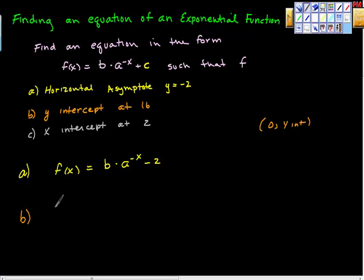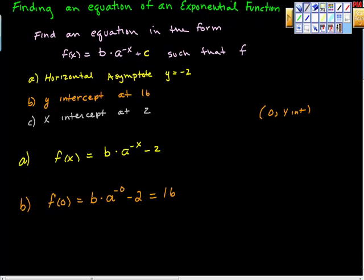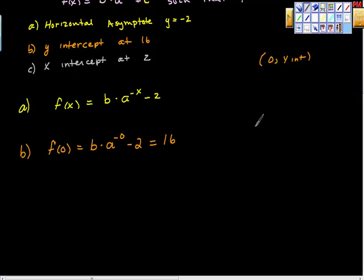When x is 0, we get b times a to the negative 0, minus 2, and we want that to equal 16. Remember the rule: a to the 0 equals 1, as long as a is not equal to 0. So a to the negative 0 is the same as a to the 0, which is 1. So b times 1 is just b. We can now say b minus 2 equals 16.